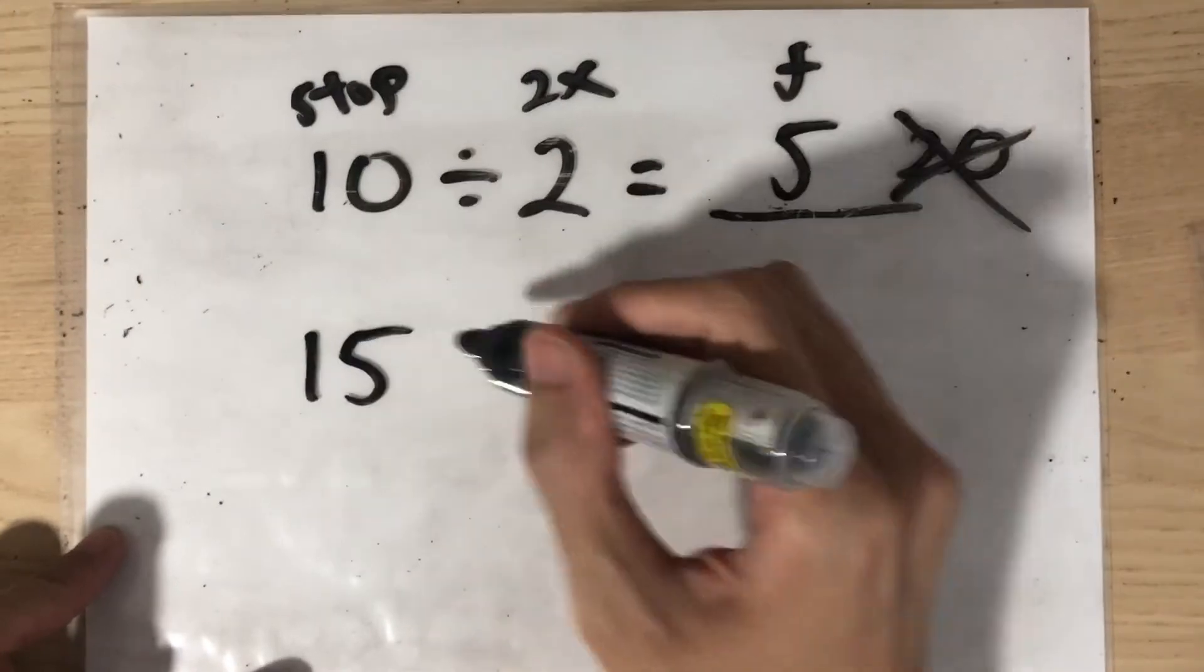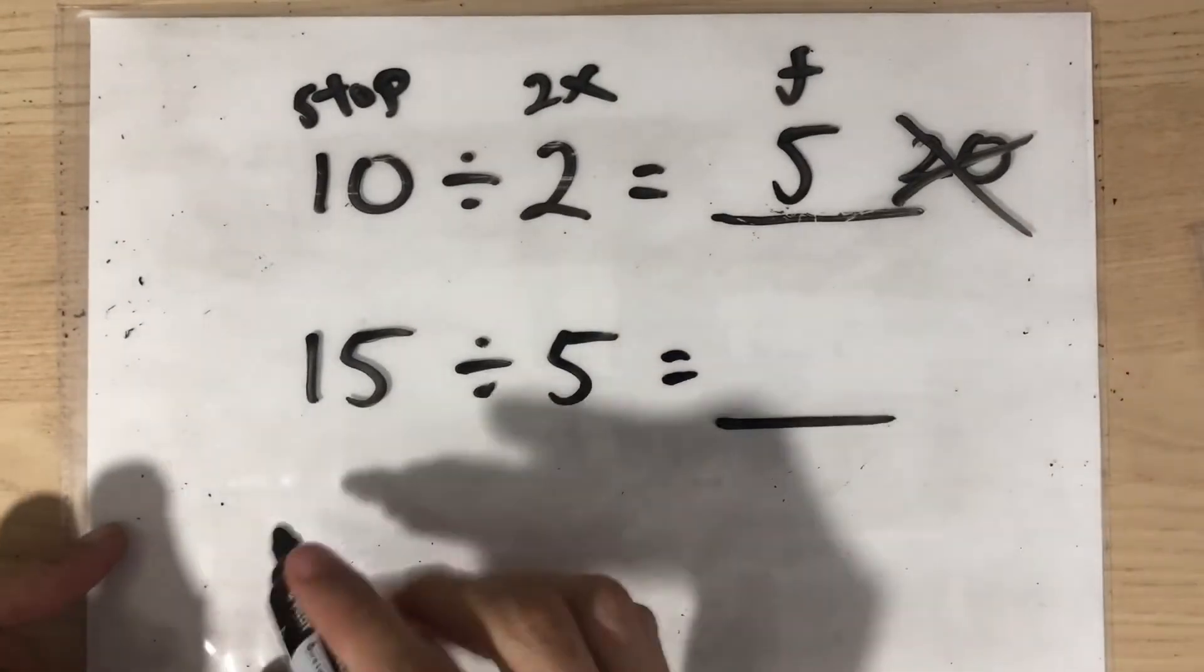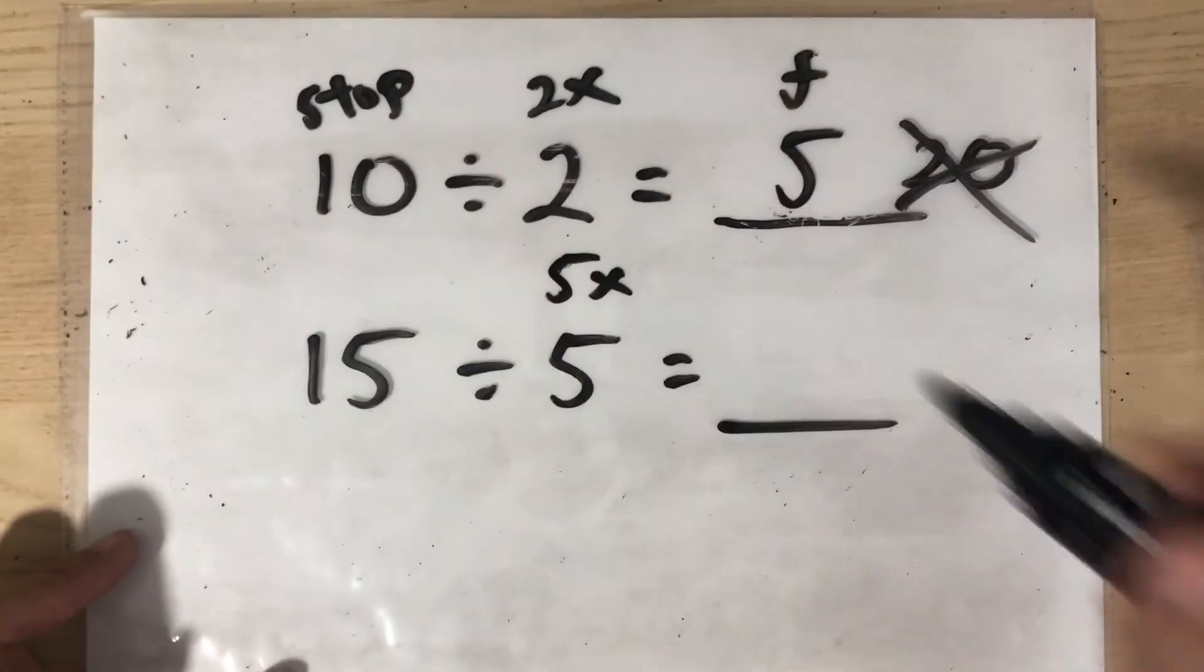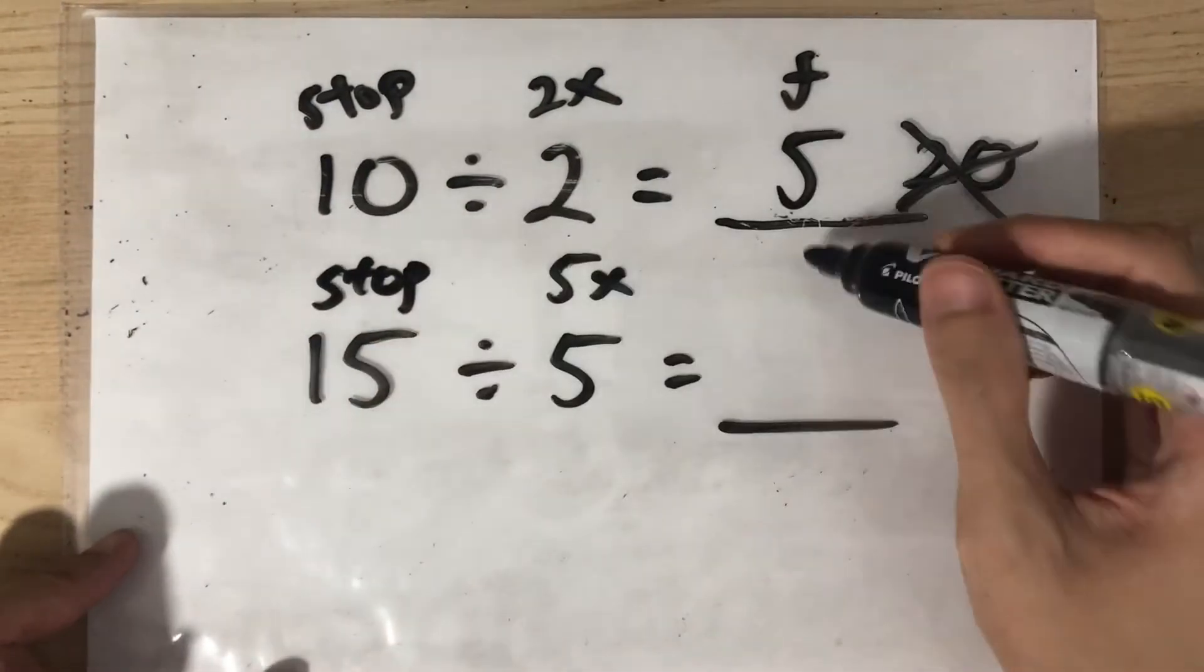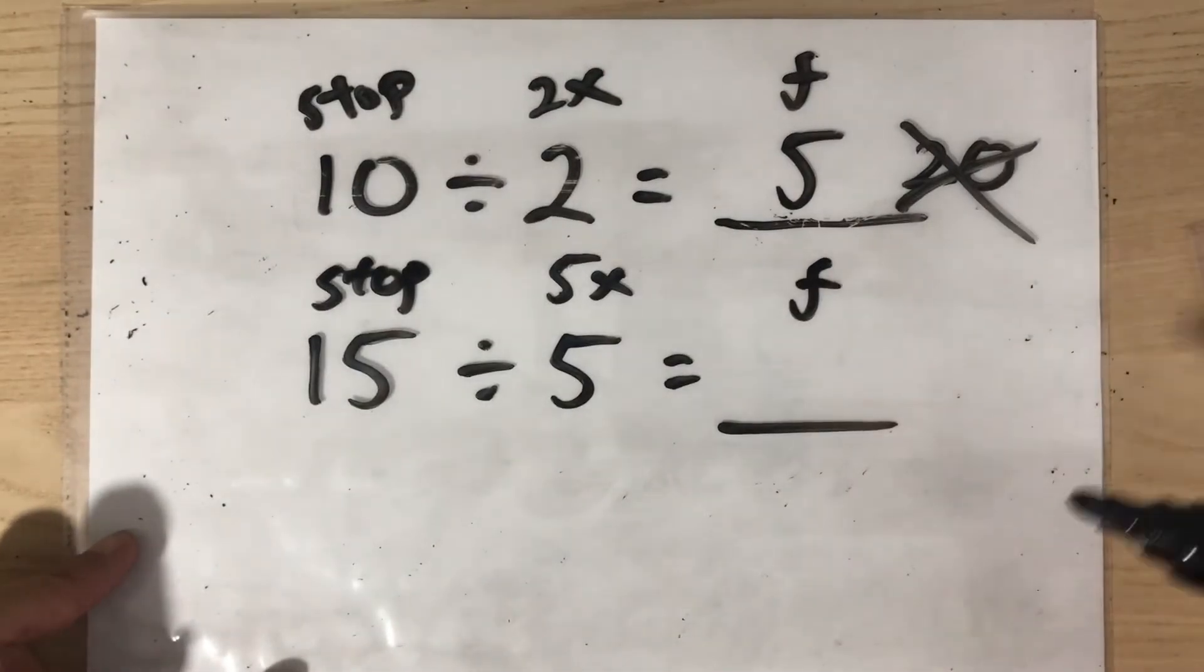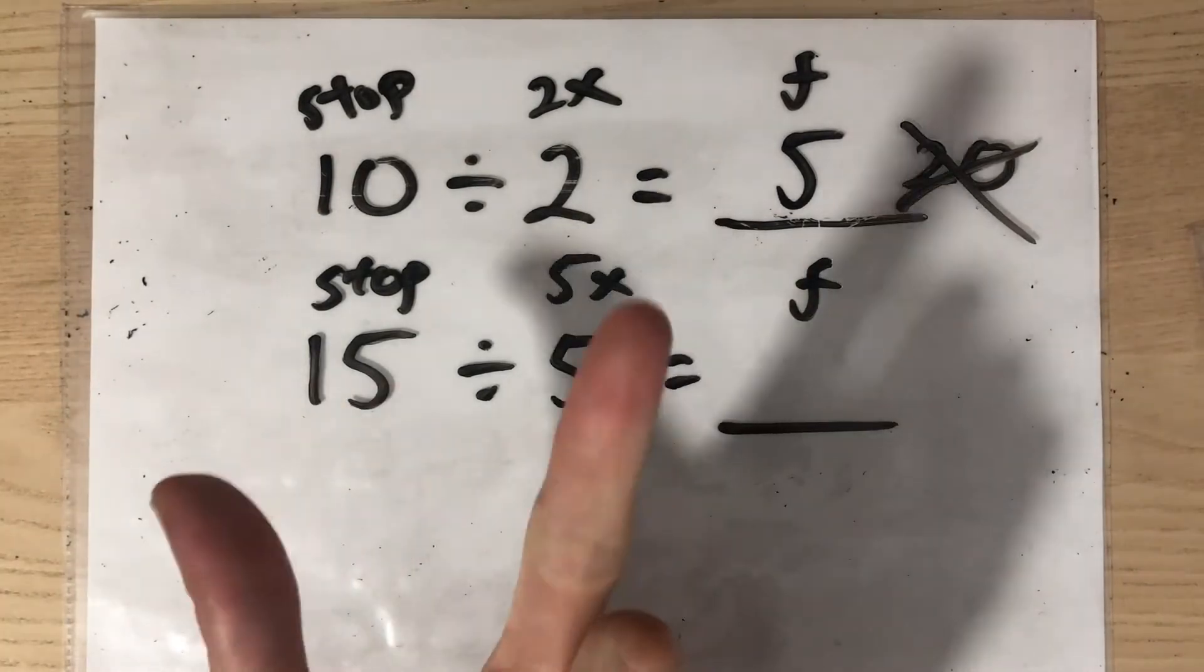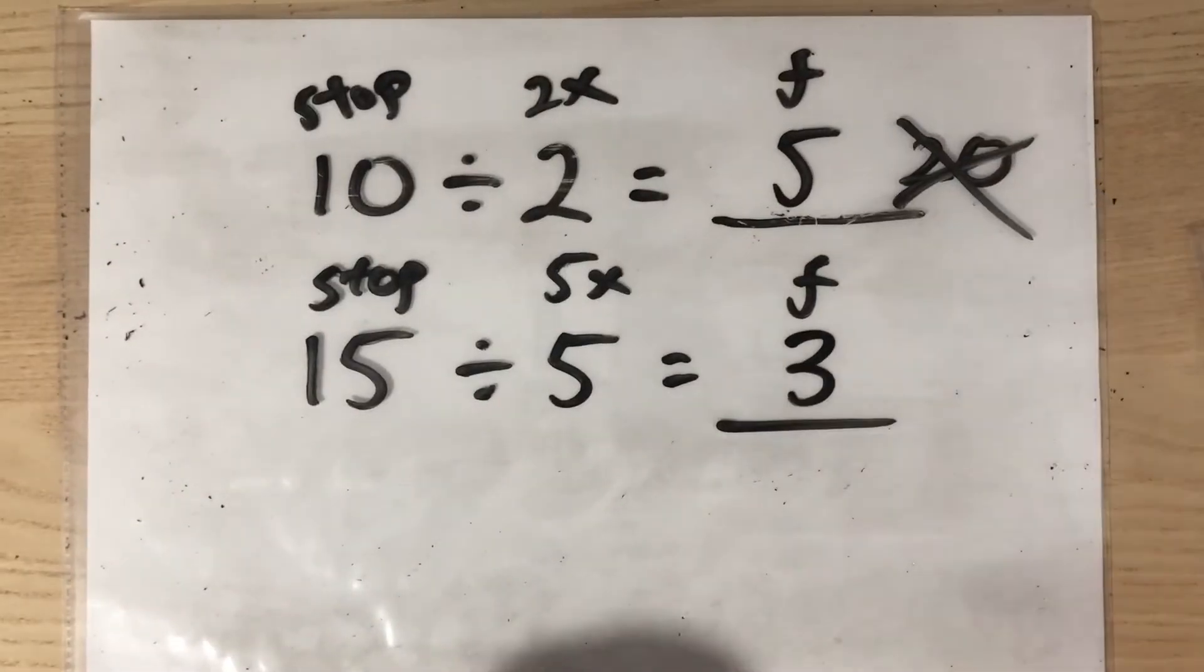Let's have a more difficult example now. Let's shift to the 5 times table. Let's take 15 divided by 5. What will that equal to? You have to do your 5 times table until you stop at 15. The answer will be the number of fingers you are holding up. So let's do the 5 times table now. 5, 10, 15. Stop. How many fingers? 3. So the answer is 3.